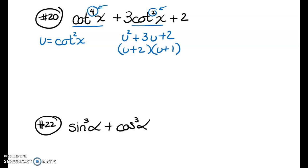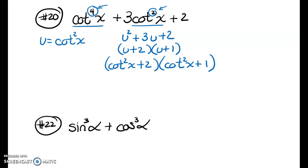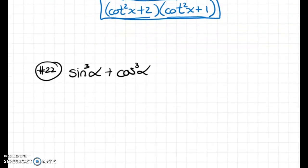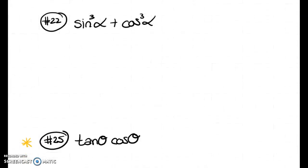I'll substitute cotangent squared back in and check if there's any more factoring to do. This first factor is complete, and this second one is also complete because the sum of squares is prime. So this is how this expression factors.